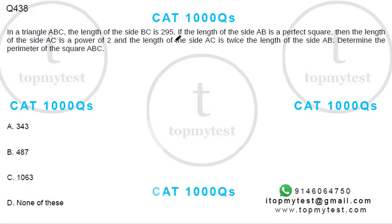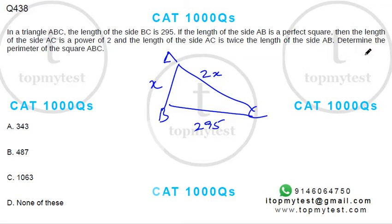Triangle ABC, length of BC is 295. So ABC 295. Length of AB is a perfect square and AC is a power of 2. AC is twice AB. So this is X, this should be 2X. Determine the perimeter of ABC.